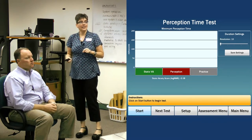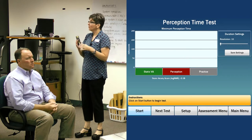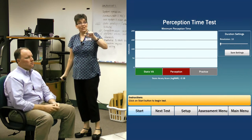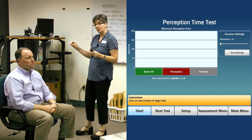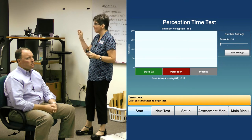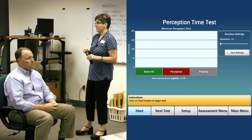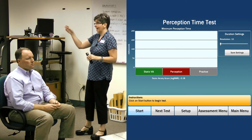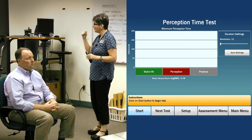Now on the screen you can see perception time will be the next test. What the computer is going to do is keep the optotype the same size — bigger than minus 0.18 logmar — to take out the variability of acuity. We'll make sure the optotype is big enough that he can definitely see it, then flash it as fast as we can to see if he can perceive it. Visual perception is not instantaneous: the visual object has to come onto the retina, go back to the visual cortex, and then be processed, so there is a time delay.